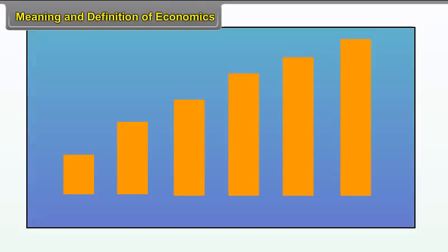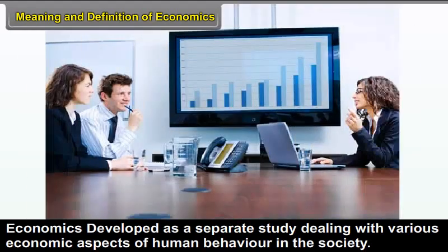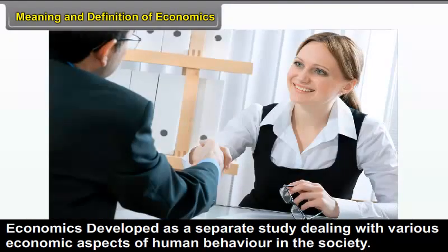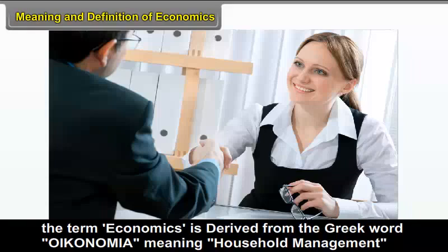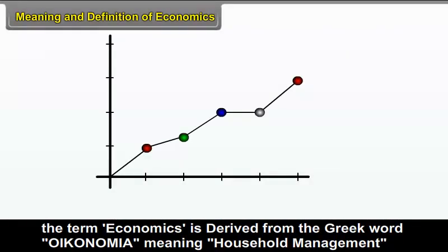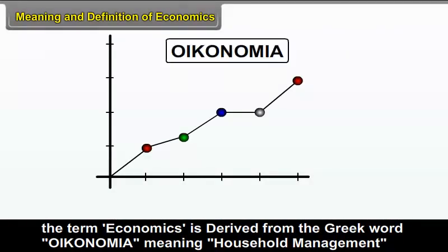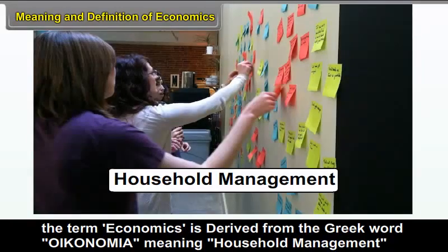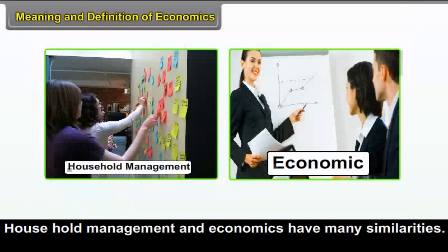1.2 Meaning and Definition of Economics. Economics developed as a separate study dealing with various economic aspects of human behaviour in the society. The term economics is derived from the Greek word 'oikonomia' meaning household management. Household management and economics have many similarities.